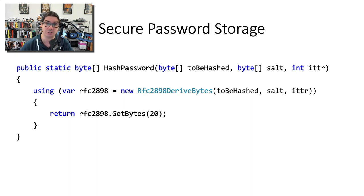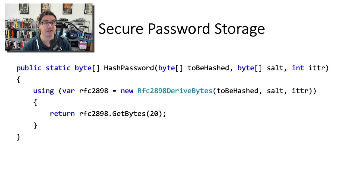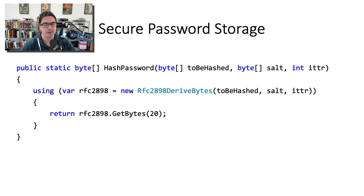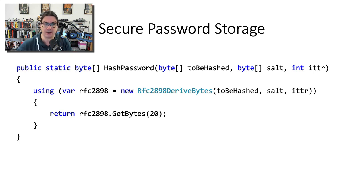We also pass in a byte array of our salt, which is a randomly generated piece of entropy, and then the number of iterations value. We instantiate the rfc2898DerivedBytes class, pass those three pieces of data in, then call GetBytes passing in 20, and that returns a byte array with our hashed password. When we call GetBytes it performs that hash multiple times based on the number of iterations. We pass 20 because internally rfc2898DerivedBytes uses SHA-1, which gives a 20-byte hash code, so there's no point deriving more bytes than that.